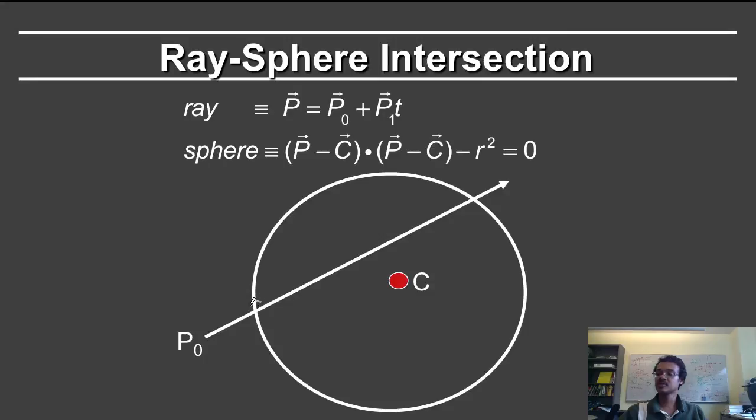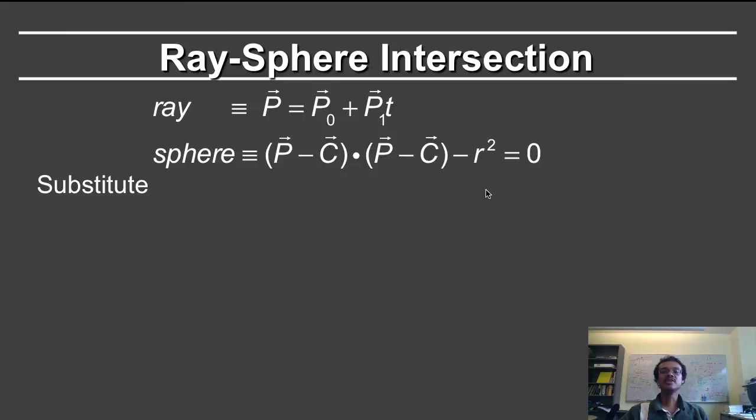What we want to find is what is the location of these intersection points. The way we do it, and the way we do all of the ray-surface intersections, is to substitute the ray equation into the equation for the sphere. So in this case, p is equal to p0 plus p1t. I will substitute that in the equation for the sphere. So p0 plus p1t minus c, and now I want the dot product with itself to be equal to r squared.